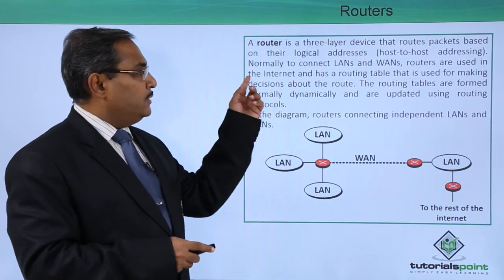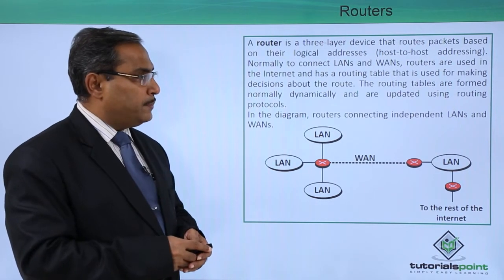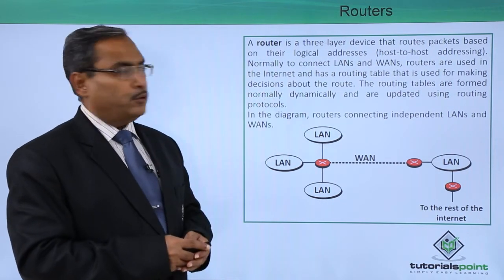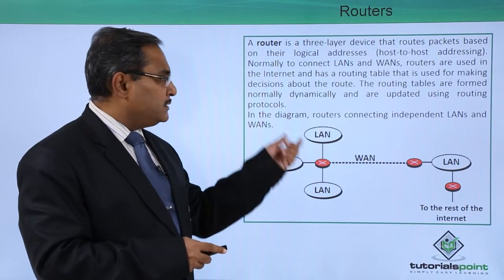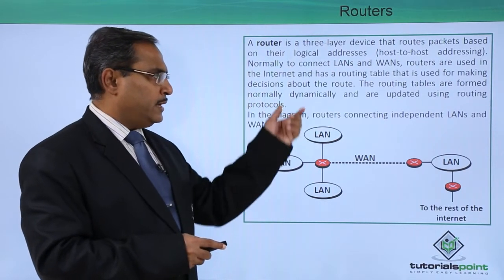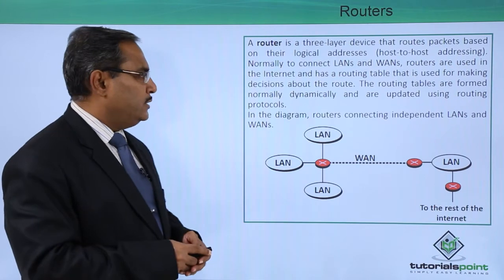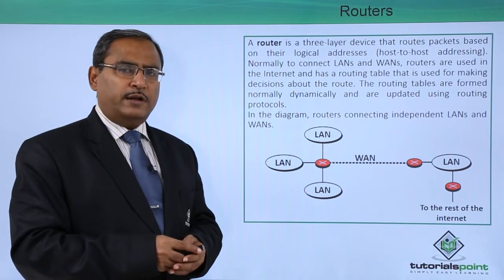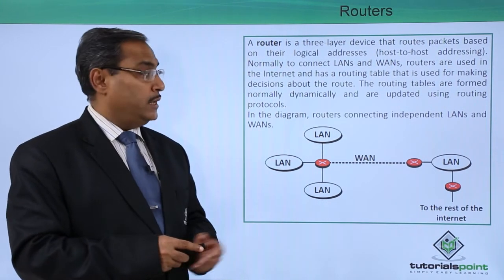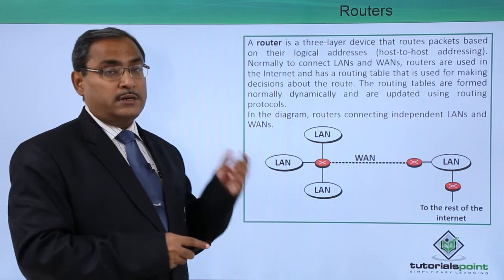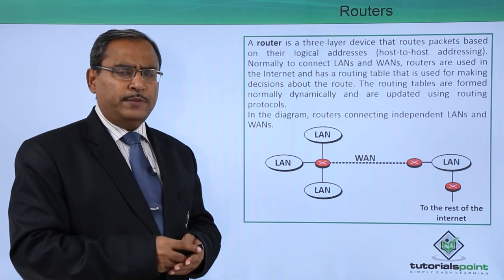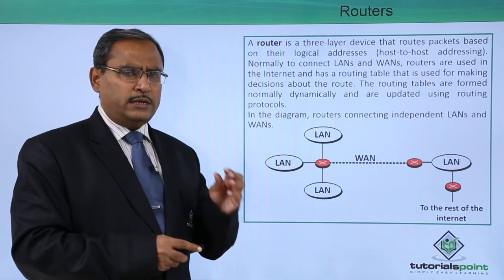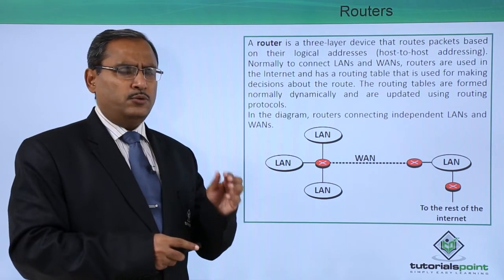Routers are used in the internet and have a routing table that is used for making decisions about the route. These routing tables are normally formed dynamically and are updated using routing protocols. There are multiple different routing protocols with the help of which the routing table gets updated and dynamically created.